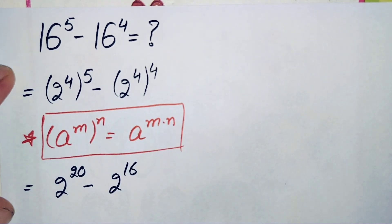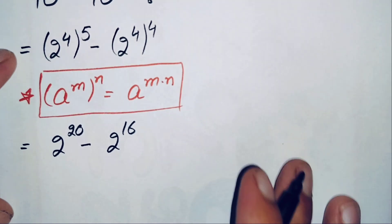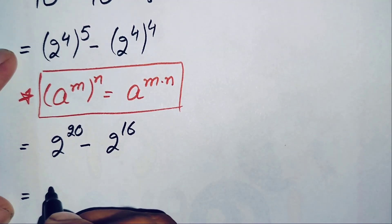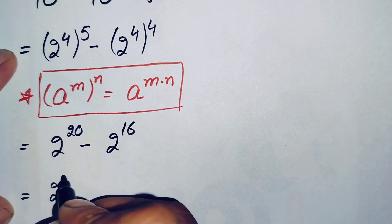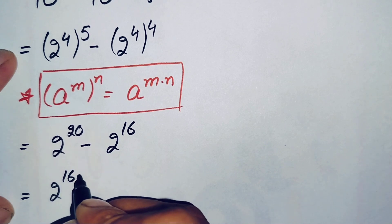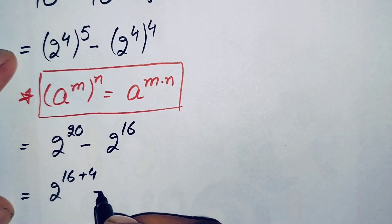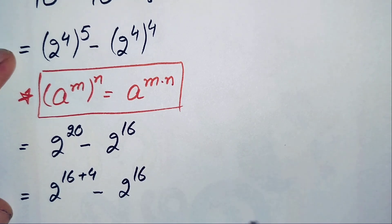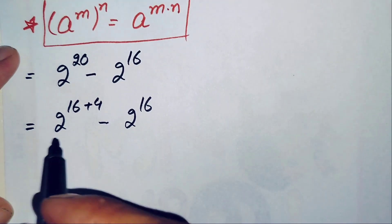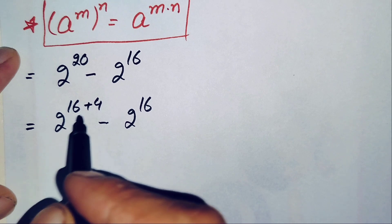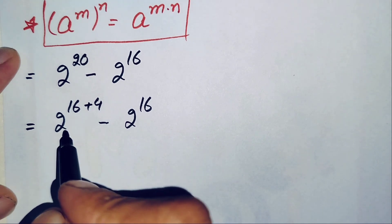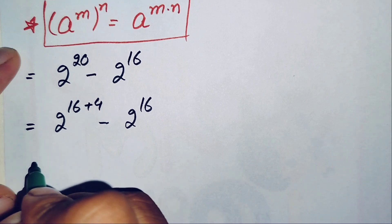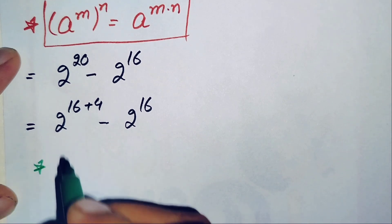Next, we can rewrite 2 raised to power 20 by expressing the exponent 20 as 16 plus 4, giving us 2 raised to power 16 plus 4, minus 2 raised to power 16. In this first term we will use another exponential math property to split the two powers over the base 2.